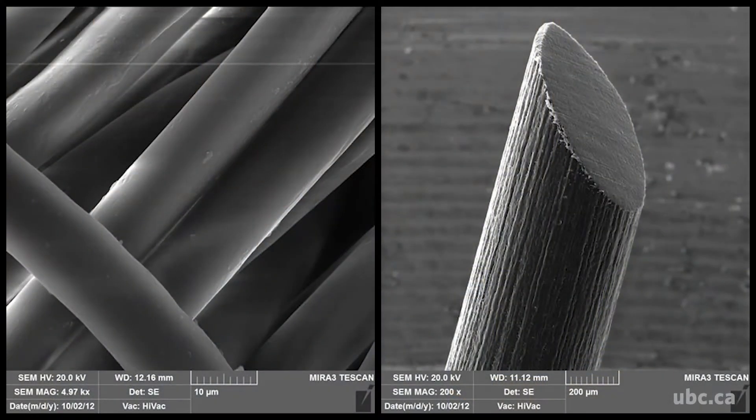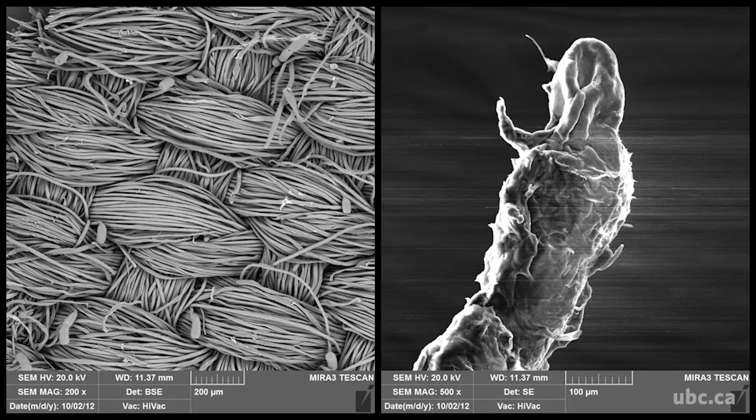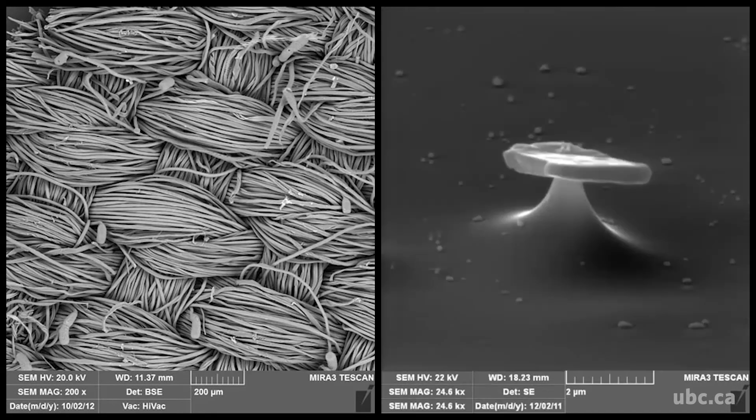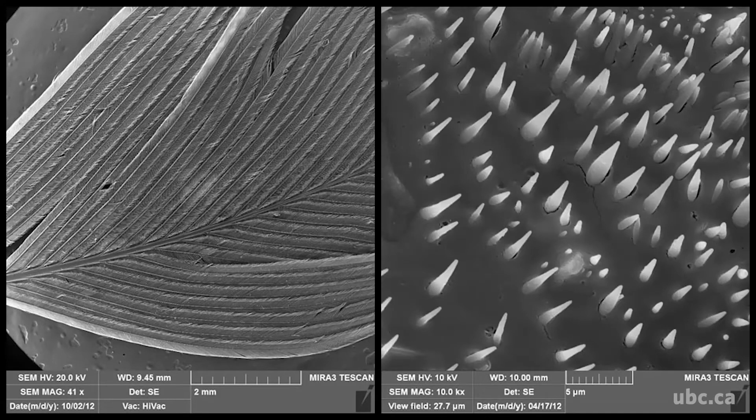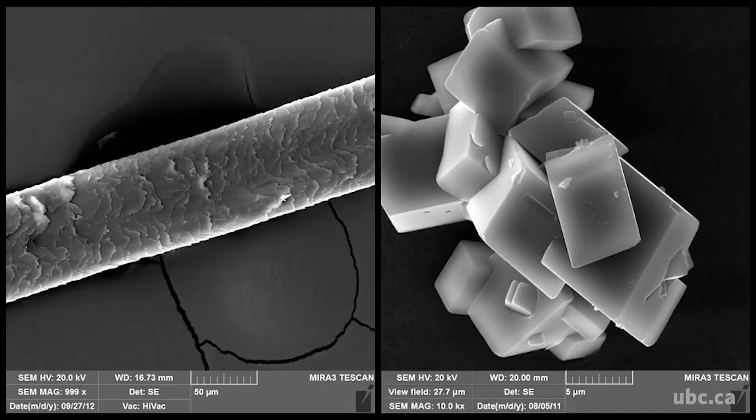The facility is open to anyone that's interested in trace element research. Some examples of research being conducted in the lab include trace element mapping of single crystals to study the conditions under which mountains are formed, looking for elemental fingerprints in minerals that are indicative of precious resources such as diamond deposits, and looking at nanoparticles that are released from commercial products into the environment.